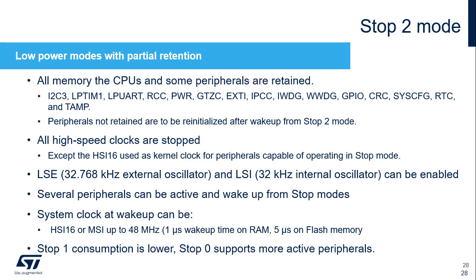STM32WL5 devices feature one stop mode with partial retention: Stop 2 mode, which still provides fast wake-up time to run mode at maximum 48 MHz. The contents of SRAMs and the CPUs and some peripherals are preserved in Stop 2 mode. All high-speed clocks are stopped except those used as kernel clocks for peripherals operating in stop modes. The 32.768 kHz external oscillator and 32 kHz internal oscillator can be enabled. System clock on wake-up can be the internal high-speed and multi-speed oscillators up to 48 MHz, with a 1 microsecond wake-up time from SRAM or 5 microseconds from flash memory.